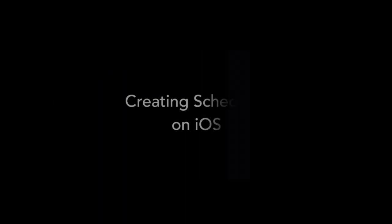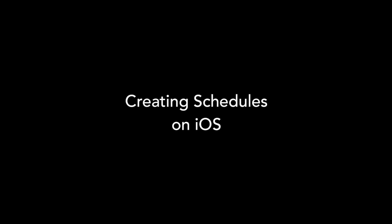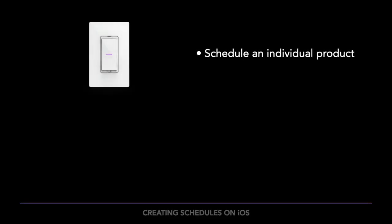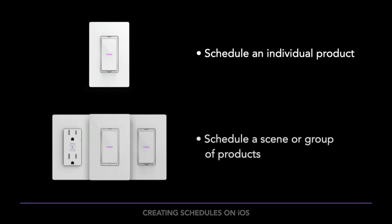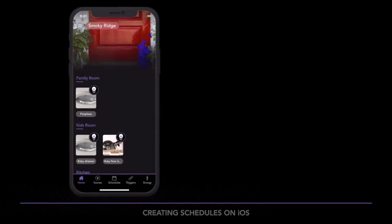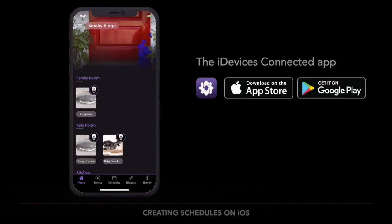The simplest way to automate your home is to schedule your products through the iDevices Connected app. You can schedule individual products, which will run even when the network is temporarily down, or you can schedule scenes, which are groups of products. Scene scheduling requires an Apple home hub.